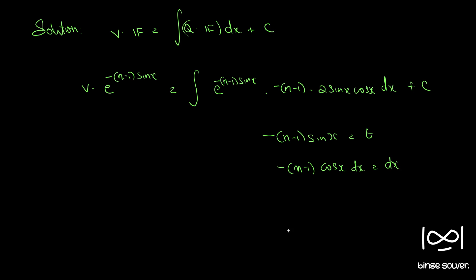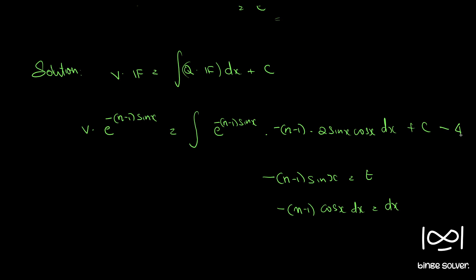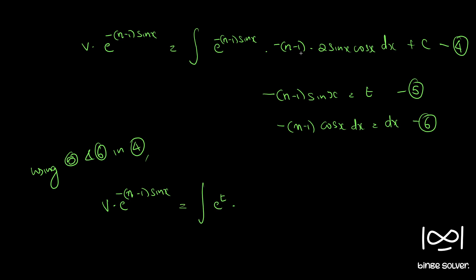Now we put minus (n minus 1) sin(x) equal to t. Differentiating both sides gives minus (n minus 1) cos(x) dx equals dt. So 2 cos(x) dx can be written as minus 2 by (n minus 1) dt.